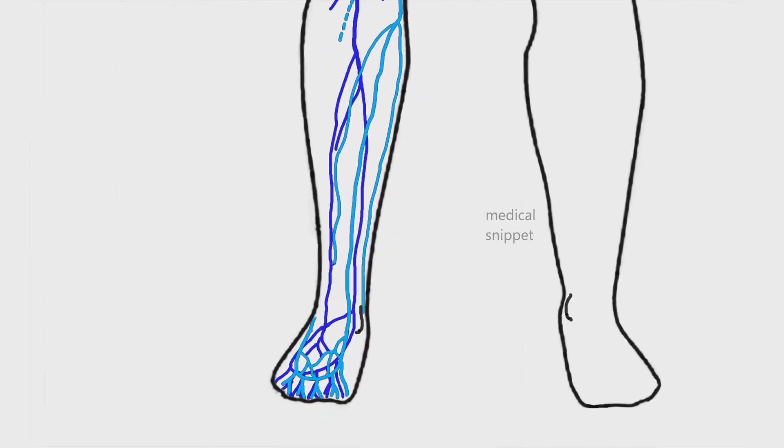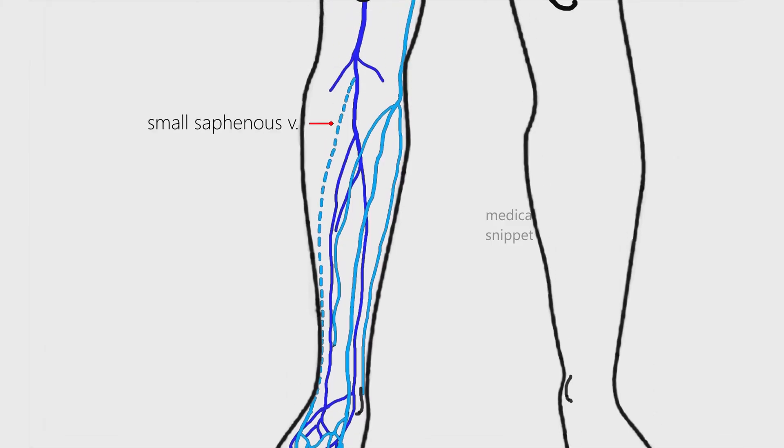The small saphenous vein passes posterior to the lateral malleolus, ascends along the lateral border of the Achilles tendon. In the upper part of the leg, it pierces the deep fascia and drains into the popliteal vein.